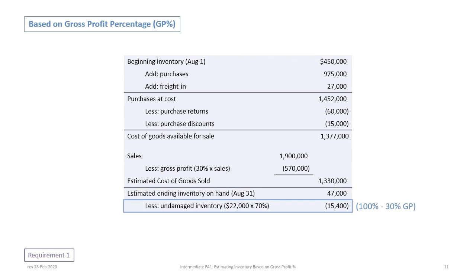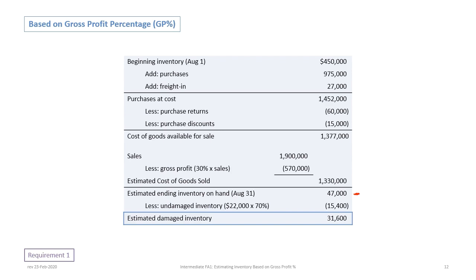Now, in this question, we're trying to figure out how much of the inventory was damaged. If the entire warehouse was destroyed, then $47,000 would be what we report for insurance purposes. However, there is some undamaged inventory estimated to have a sales value of $22,000. Since our cost of goods sold percentage is 70%, the undamaged inventory at cost is $15,400. Taking total estimated inventory of $47,000 and subtracting the undamaged inventory of $15,400, the damaged inventory is $31,600.